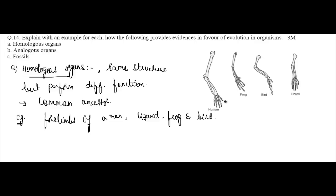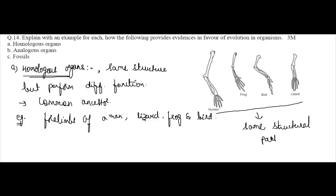All these organisms use their four limbs for performing different functions, but all these four limbs have originated from the same structural pattern. That is what we call homologous organs — same structure but different function, and they are evolved from a common ancestor.